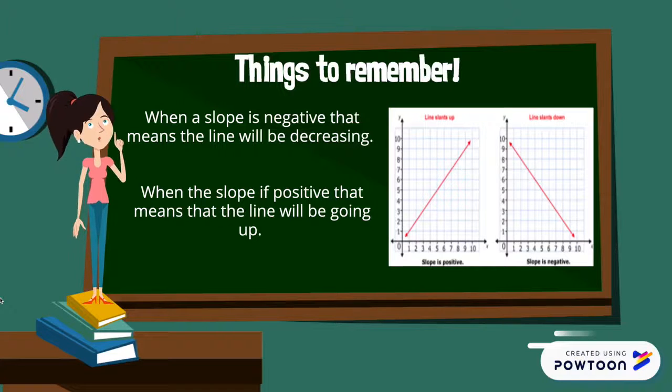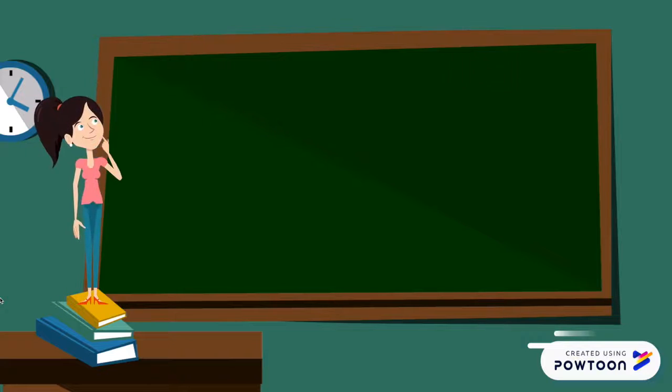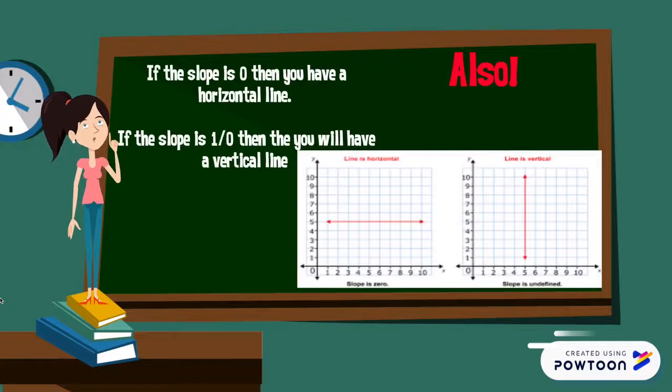The first example we see is with a slope that is positive, and the second example is a slope that is negative. You can determine whether slope is positive or negative, or the line is going up or going down, by the slope being negative or positive. Also we have to remember that if a slope is zero, we have a horizontal line, and if the slope is one over zero, we will have a vertical line and we will have to do the vertical line test to see if any of the numbers repeat themselves.